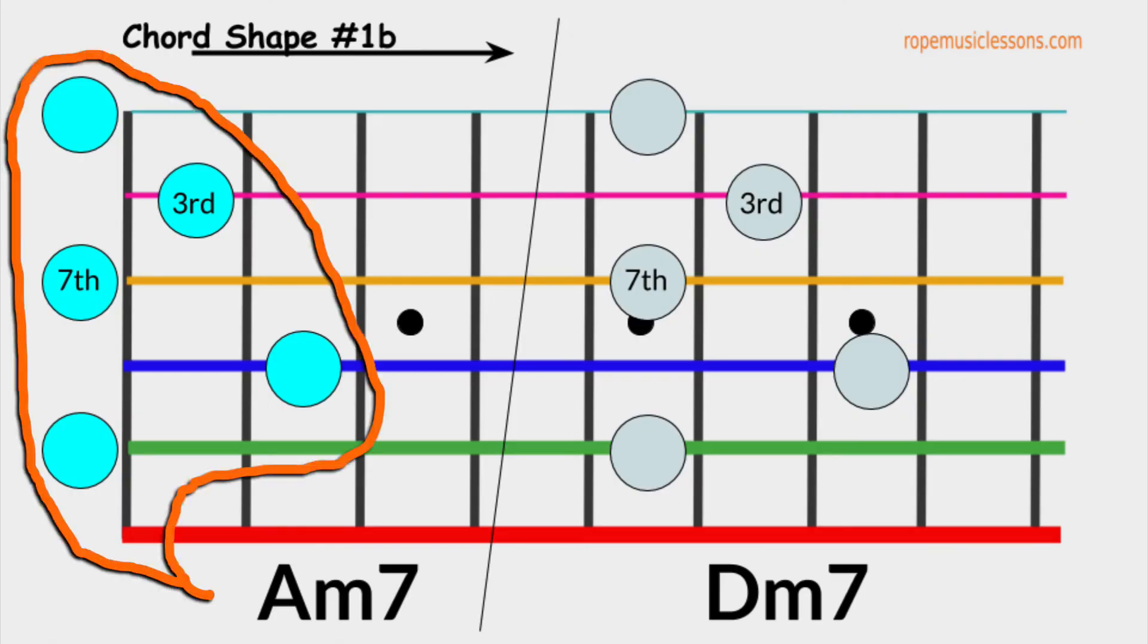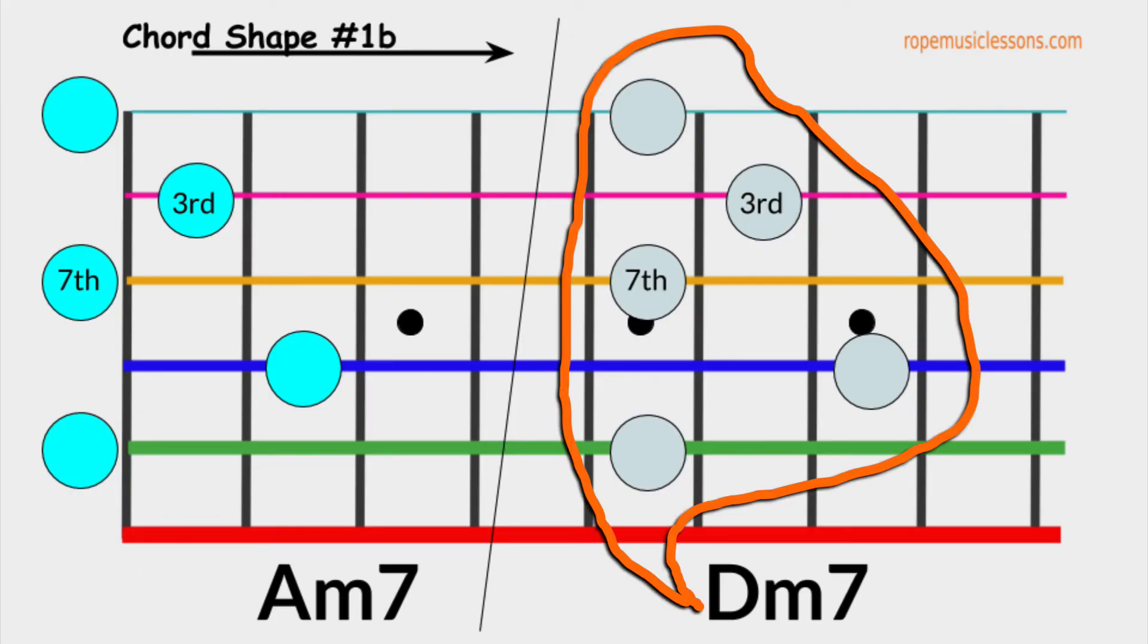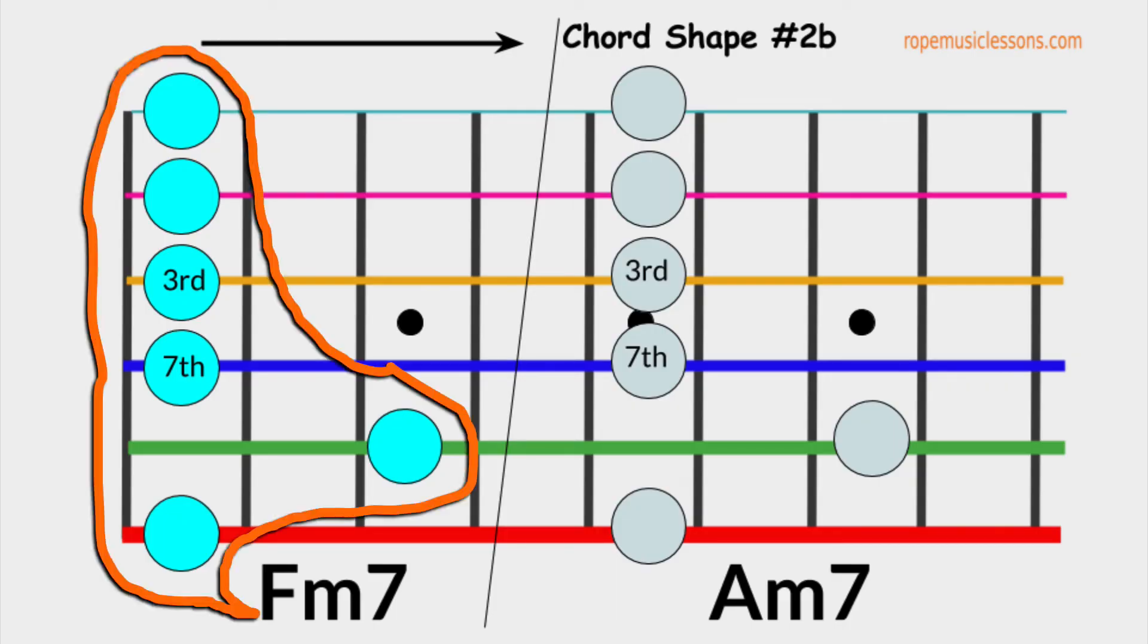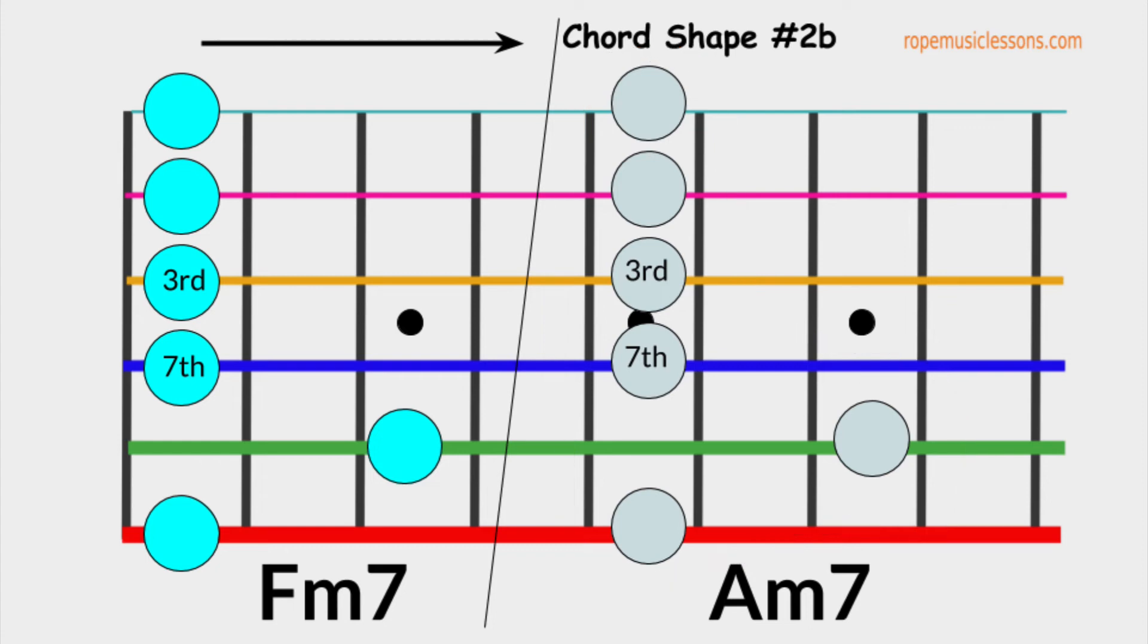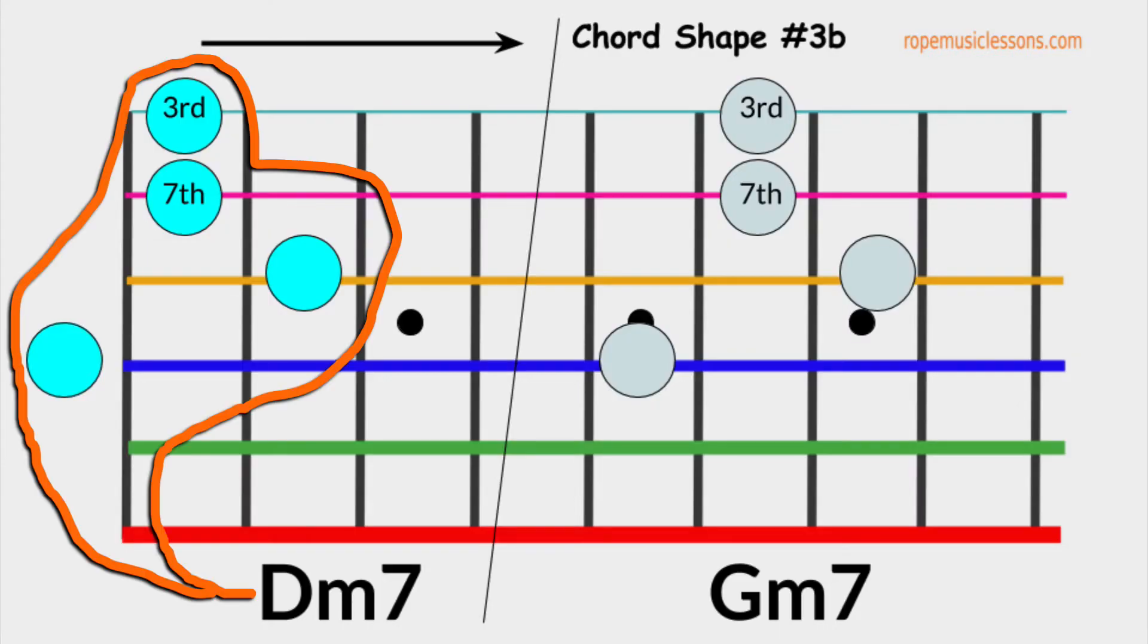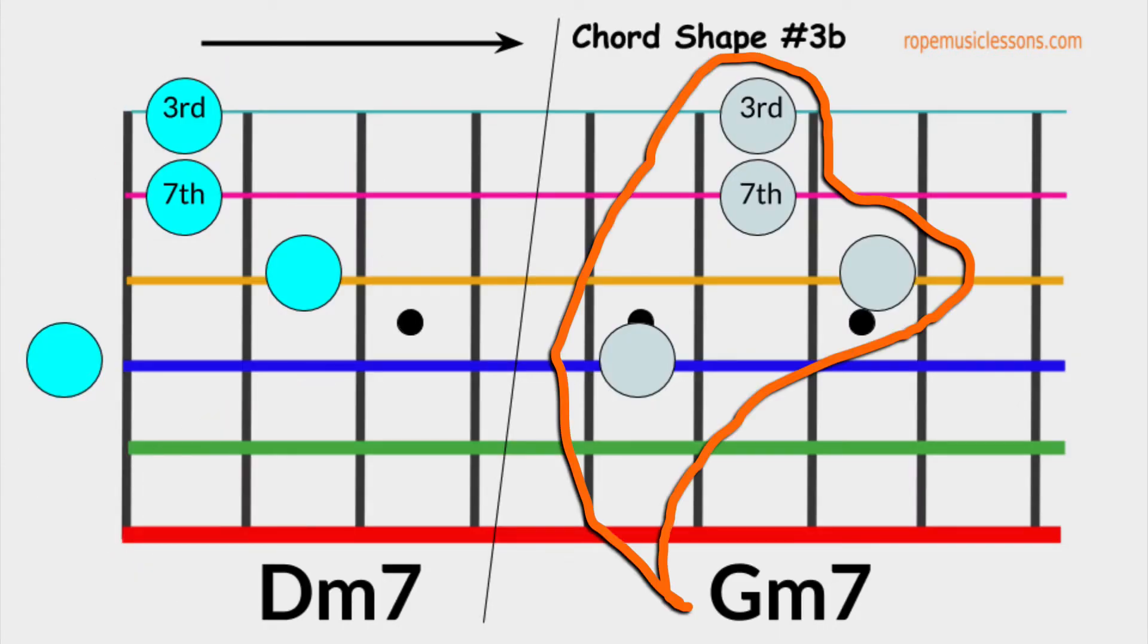This is A minor 7 and D minor 7. This chord shape is derived from chord shape number 1 again. Let's call this chord shape number 1B. This is F minor 7 and A minor 7. This shape is derived from chord shape number 2. So, let's call this chord shape number 2B. This is D minor 7 and G minor 7, which is derived from chord shape number 3. Let's call this chord shape number 3B.